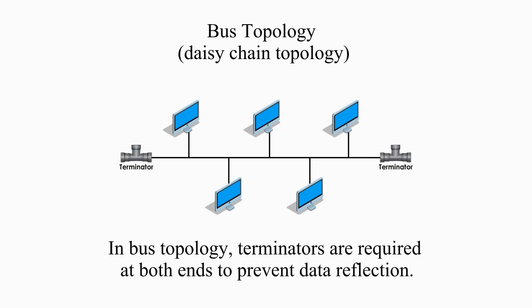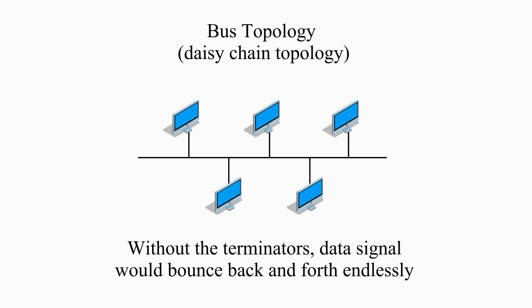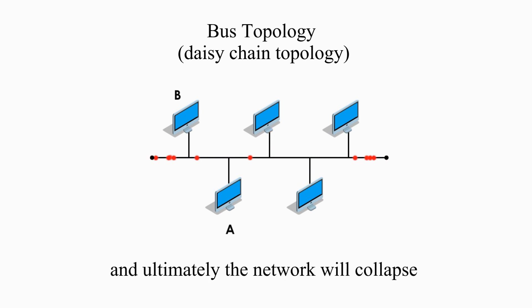In bus topology, terminators are required at both ends to prevent data reflection. Without the terminators, the data signal would bounce back and forth endlessly and ultimately the network will collapse.